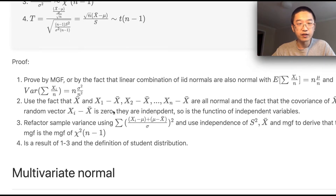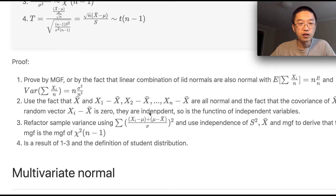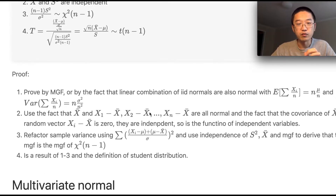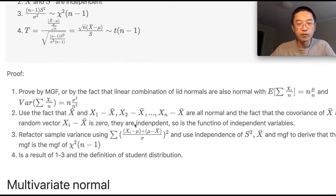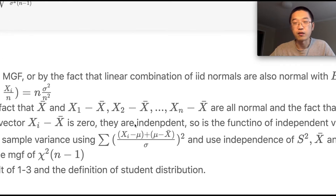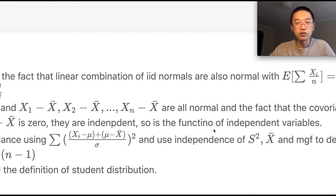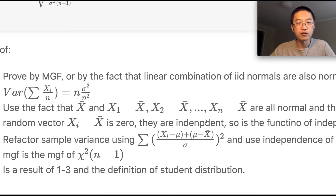They have covariance zero, and because they are normal random variables, this is a special property of multivariate normal distributions: if two normal random variables have covariance zero, then they are actually independent. I won't prove that here, but it's one of the key characteristics of multivariate normal random variables. So these two are independent.